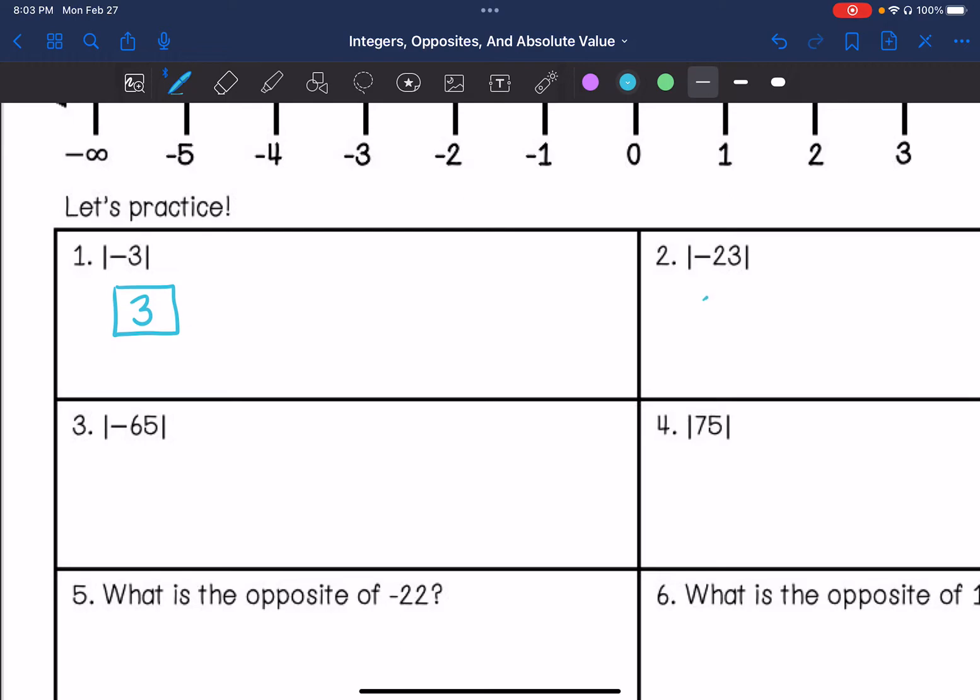So negative 23, my absolute value would be 23. It's 23 units away from zero. Distance is not negative, so the negative would go away. Absolute value of negative 65 is 65. Absolute value of 75 is 75. Although it is positive, its distance is still 75 away from zero.